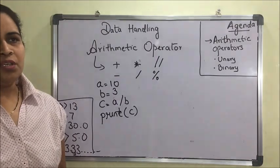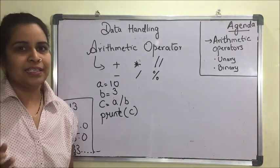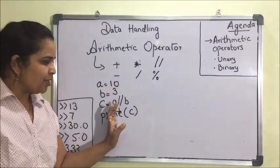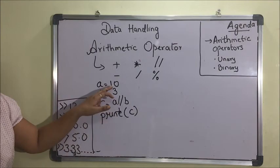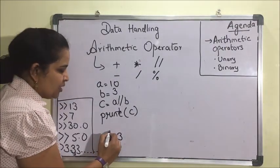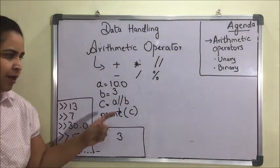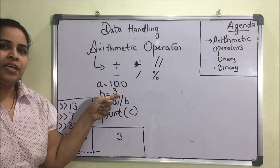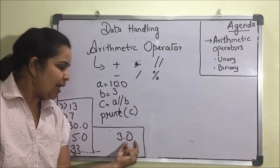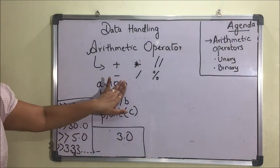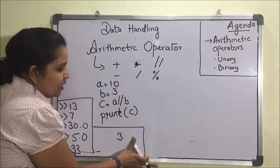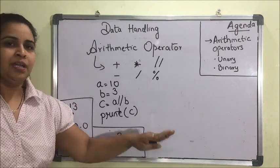Floor division is an operator that always truncates the decimal part. If we divide 10 by 3 using floor division with both operands as integers, the output will be 3, not 3.0. But when one operand is a float and the other is an integer, the output will be 3.0 — it truncates the decimal portion but appends a zero. To get a plain integer result with no decimal, both operands should be integers.